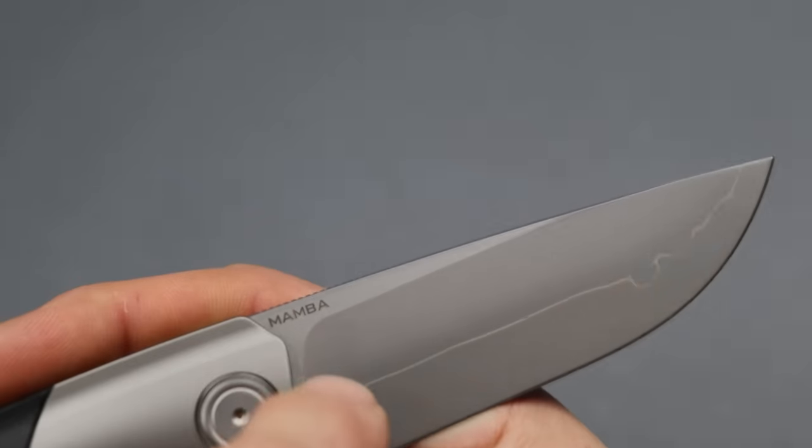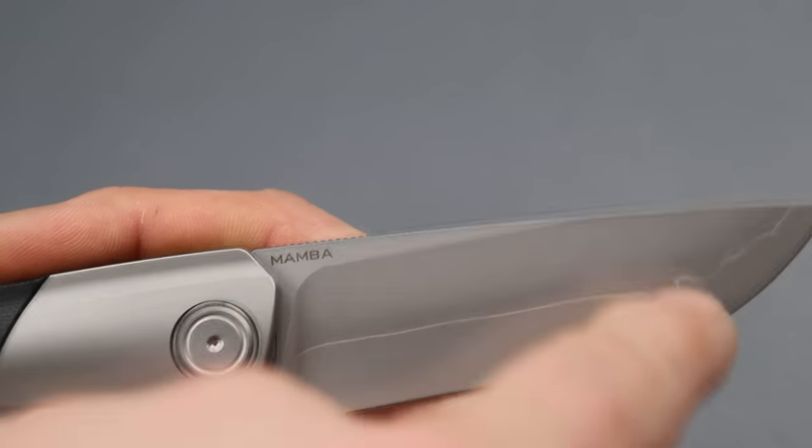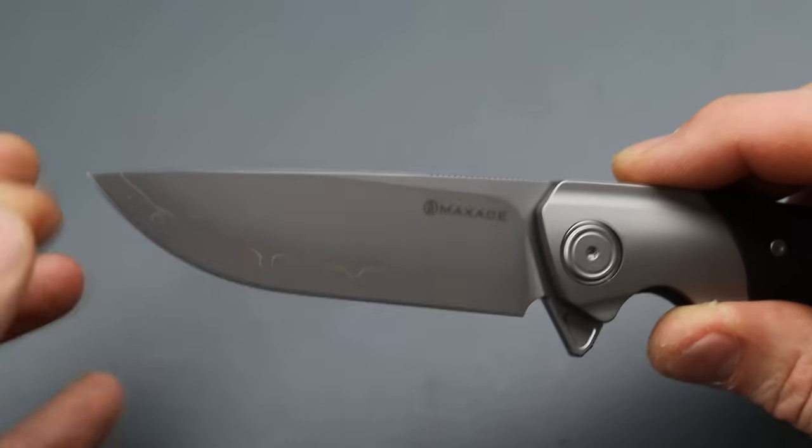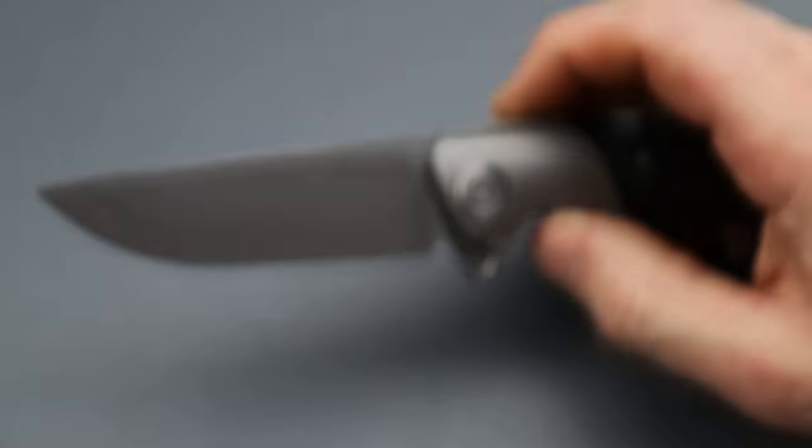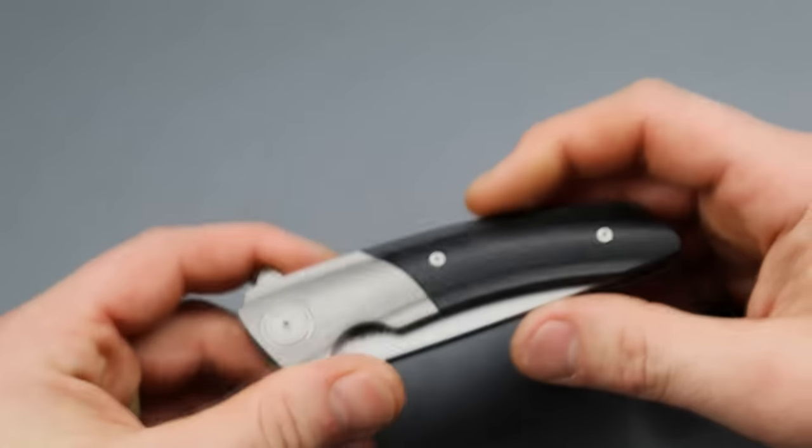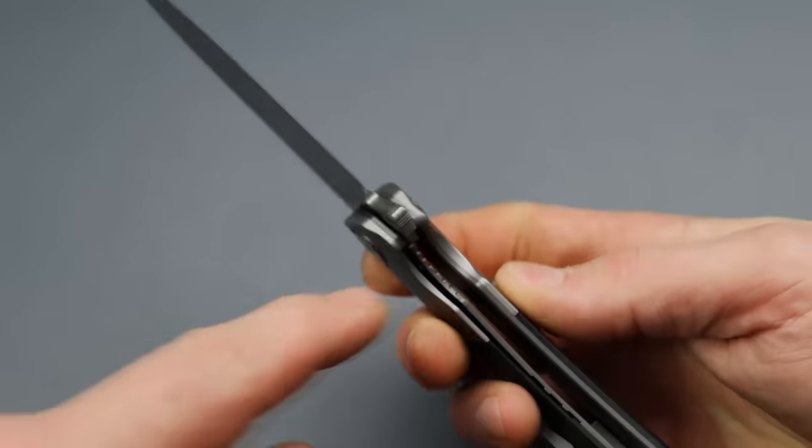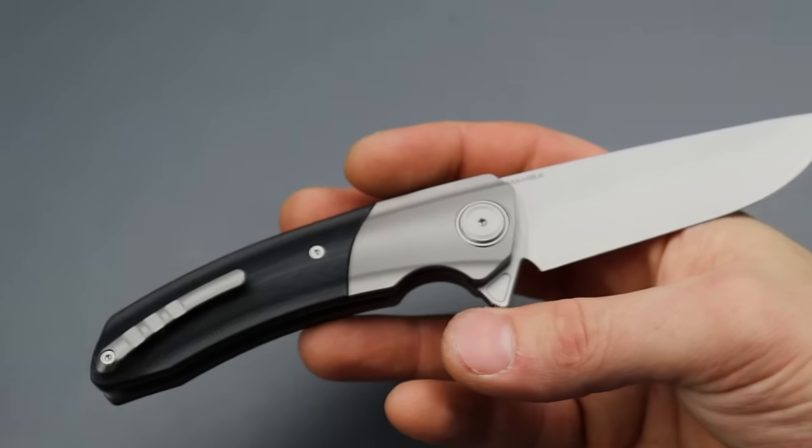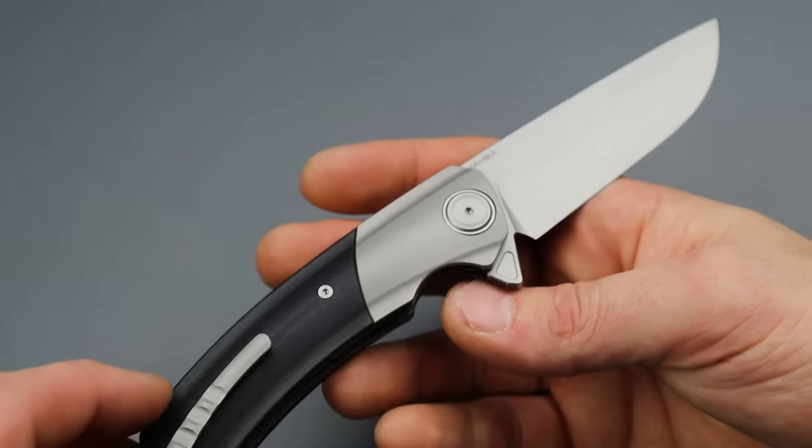It's weird how you actually see the layer right here is higher than on this side, just the way it's separated. But anyways, you cannot feel the transition at all between the steels. Now it has a titanium bolster on top of titanium liners. I'm surprised it didn't just do a titanium bolster lock, but regardless this is still just fine.